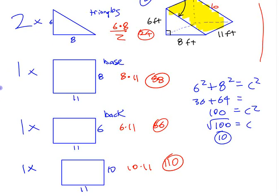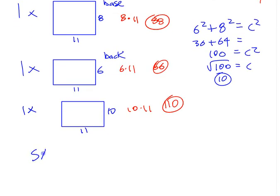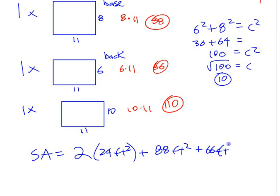You can work them all out separately like that and then add them all together if that works more for you. The area of this one here, 6 times 8 divided by 2 gives me 24. That's the area of the triangle. This is 88. That's the area of that rectangle. This is 66 and this is 110. We have 2 of the triangles, though. 2 of the triangles. So it's not just 24. It's 2 times 24 if we're working this out.